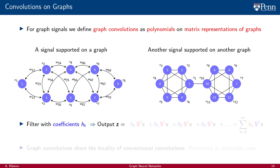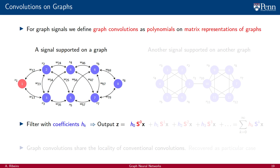To illustrate this idea, consider a signal supported on the graph shown on the left and suppose that we want to run a convolutional graph filter with coefficients hk. The output is defined as a summation of diffused versions of the input signal x scaled by respective coefficients: we add x modulated by h0, a diffused version modulated by h1, a twice-diffused version modulated by h2, a thrice-diffused version scaled by h3, and so on. In the end, the graph convolution is expressed as a pre-multiplication of x by a polynomial on a matrix representation of the graph, modulated by coefficients hk.